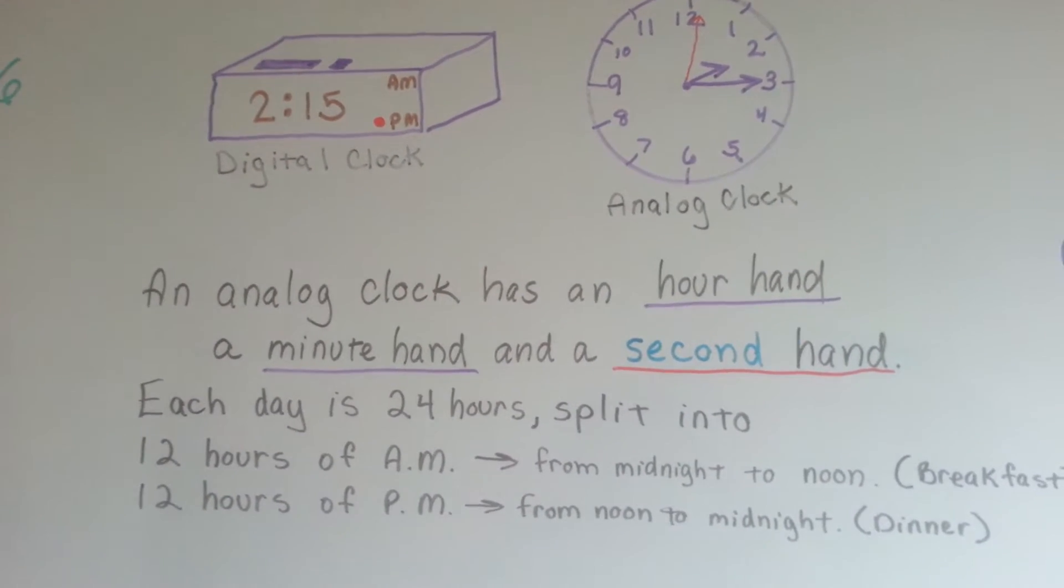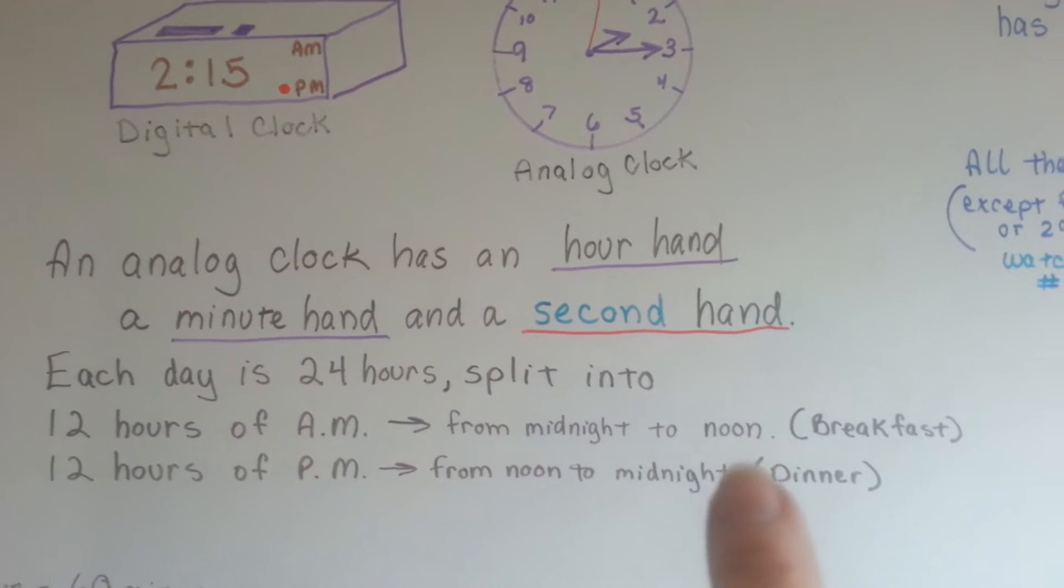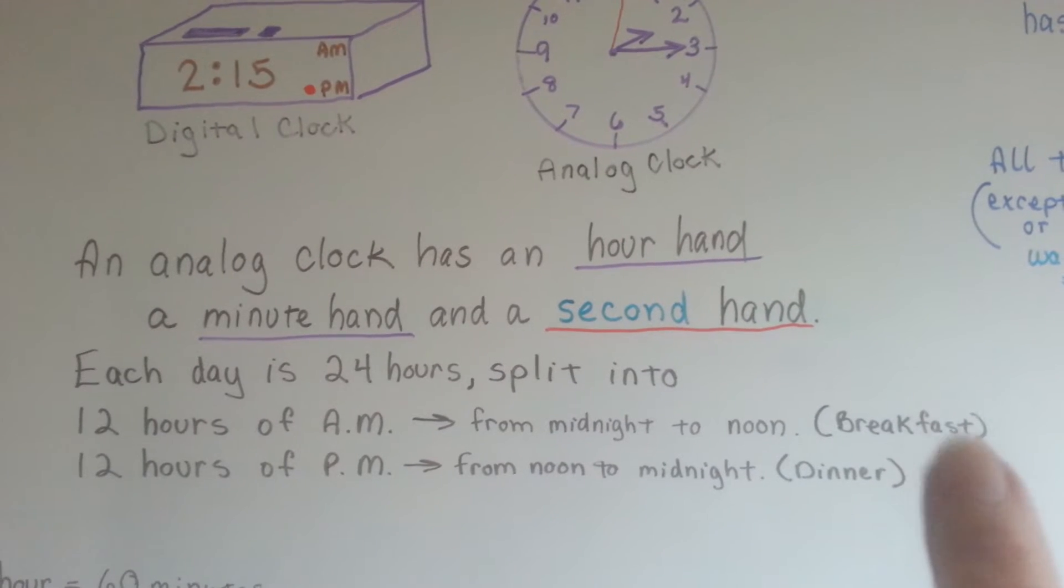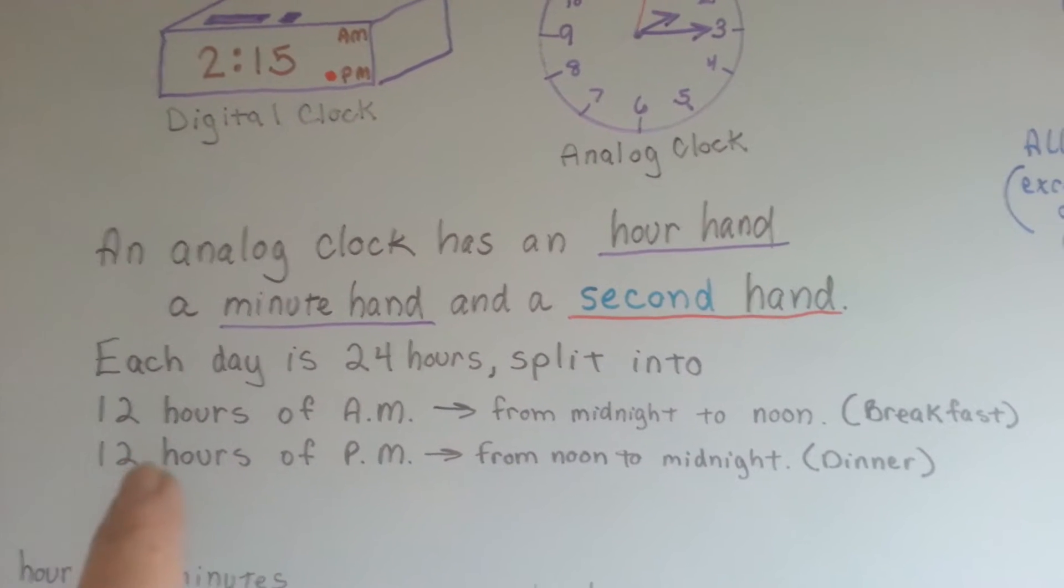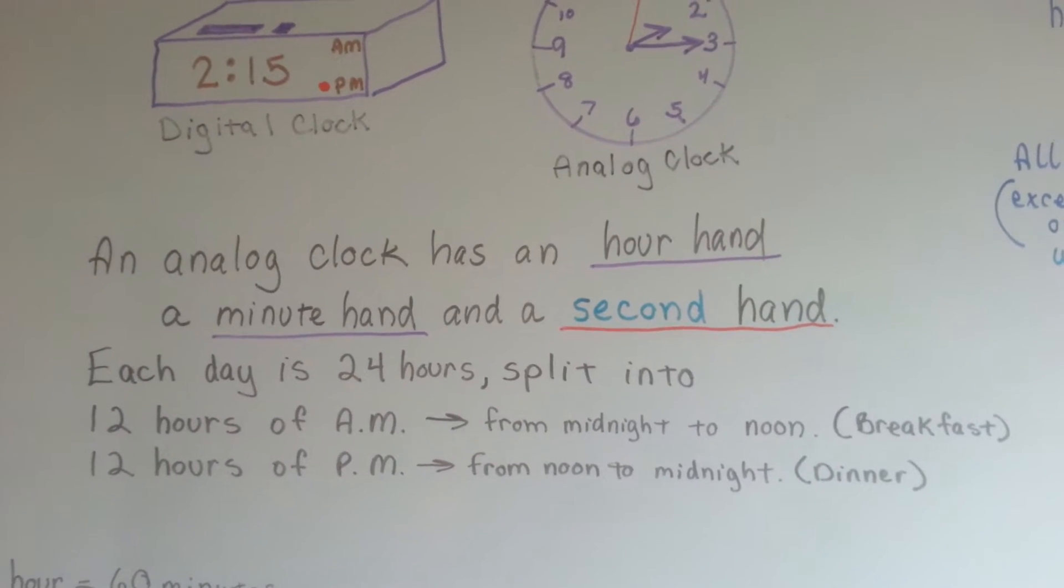Each day is 24 hours, split into 12 hours of a.m. from midnight to noon, that's in the morning when you'd have breakfast, or 12 hours of p.m. from noon to midnight, that's when you'd have dinner and get ready for bed.